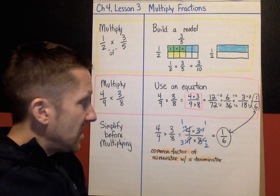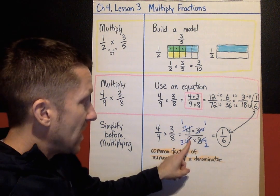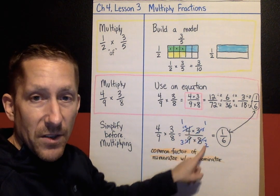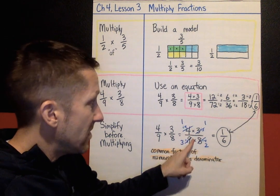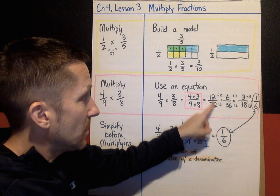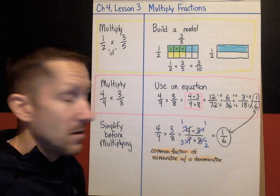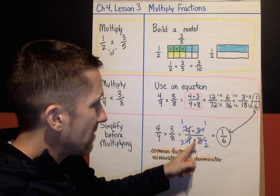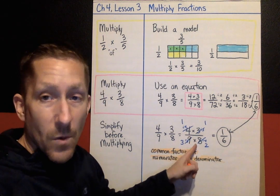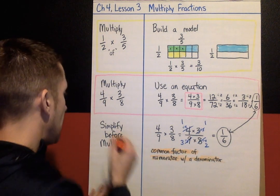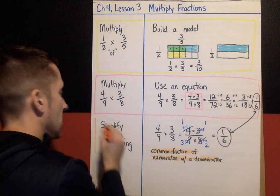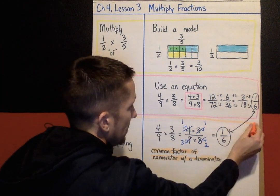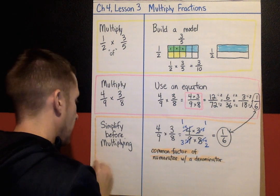The advantage of doing it this way is you're simplifying with much smaller numbers. You don't have to deal with big numbers like twelve and seventy-two. So if you can get used to simplifying before you multiply, it's going to make your life a lot easier.